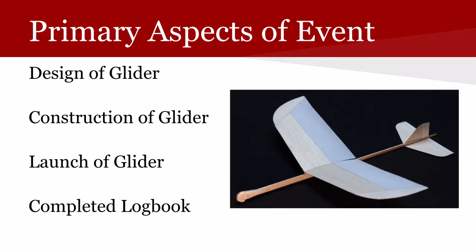From what I have learned about this event, there are four primary aspects: the design of the glider, construction of the glider, launch of the glider, and a completed logbook. The first part, the design of the glider — it can be an original design that students come up with, or you can purchase a kit, as I did, available at tons of places online. On the Science Olympiad website, there are links to gliders that they endorse. I chose to go with the Freedom Flight model, which is pictured here on the right.